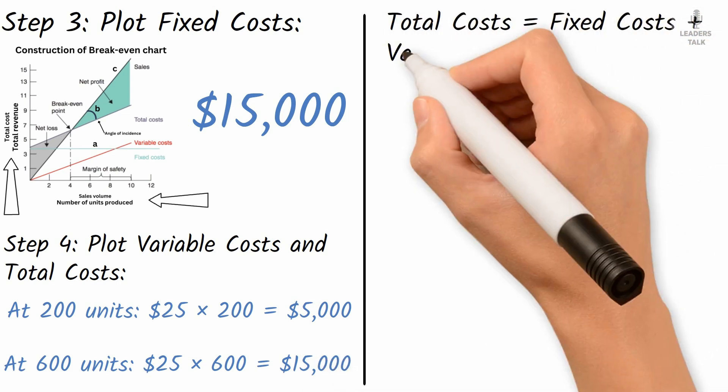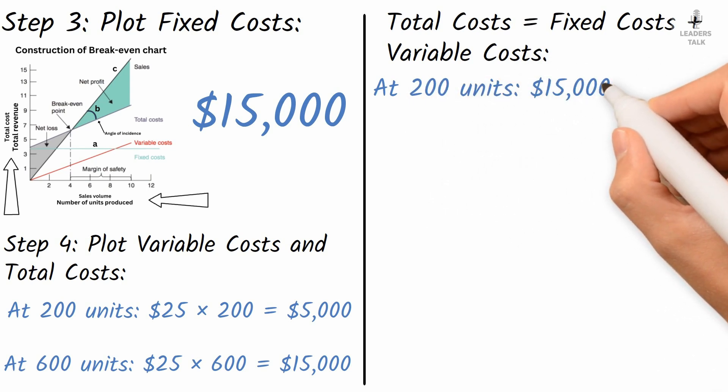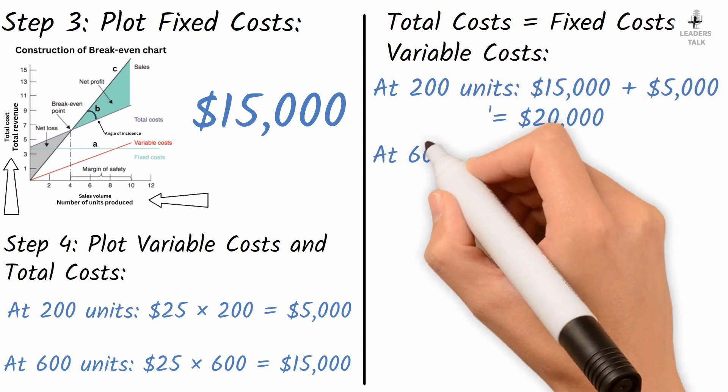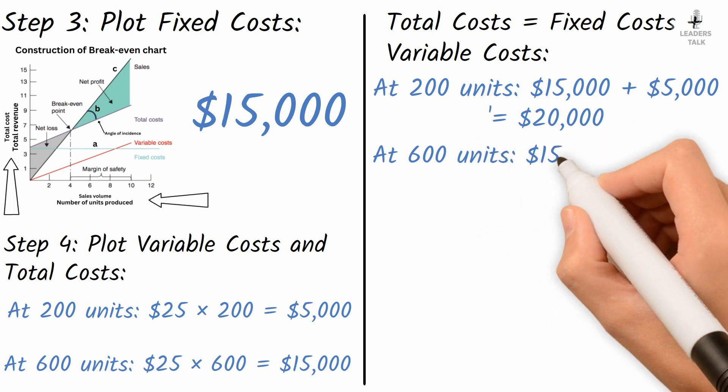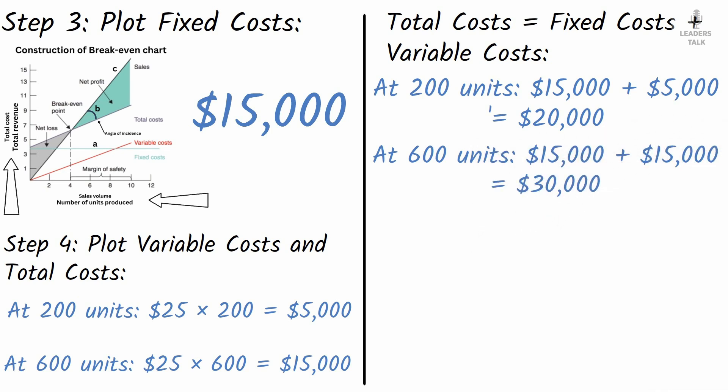Total costs equal fixed costs plus variable costs. At 200 units, $15,000 plus $5,000 equal $20,000. At 600 units, $15,000 plus $15,000 equal $30,000.